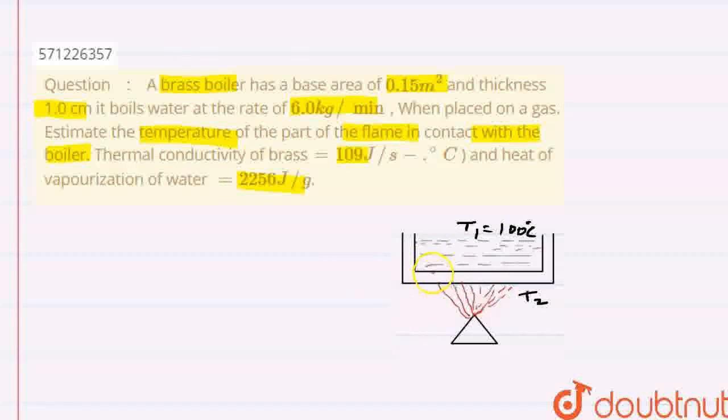A heat current will be flowing through this surface. The length of the conductor, L, is given here as 1 centimeter, that will be 10 to the power minus 2 meter. And the base area of this pan is given as 0.15 meter square, so area A is 0.15 meter square.